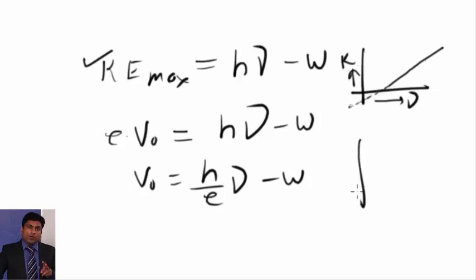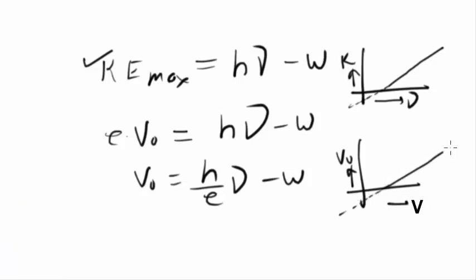Now the graph V0 versus nu, what will be the graph? Very similar graph. The difference is where? In this slope, y is equal to mx plus c. Slope is m. Here the slope is h. Here the slope is h upon e. So what will be the ratio?